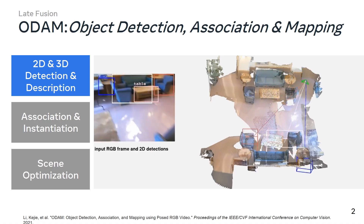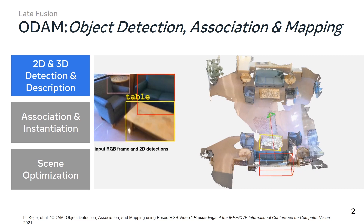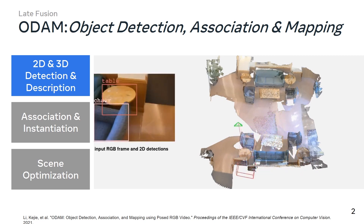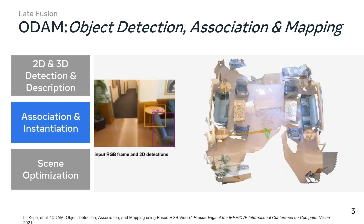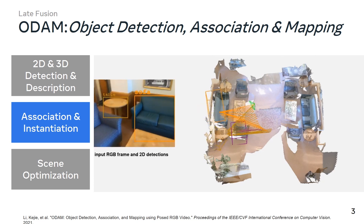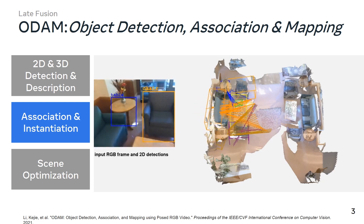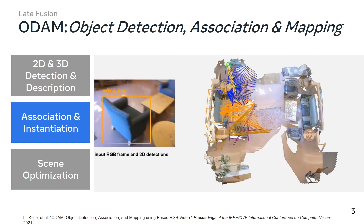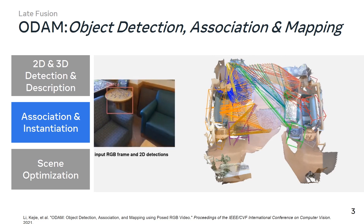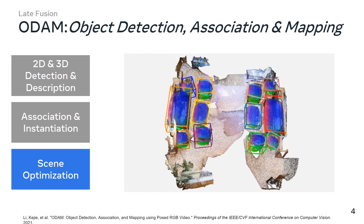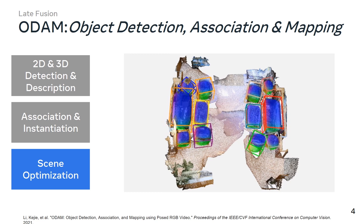In the next work that we called ODAM — object detection, association, and mapping — we addressed some of the shortcomings of Frodo, namely to directly detect in 3D, and then learn how to associate and instantiate the 3D models, the 3D bounding boxes in the world frame. You can see the tracks here, color-coded. And then finally, we had some scene optimization to improve the bounding boxes.